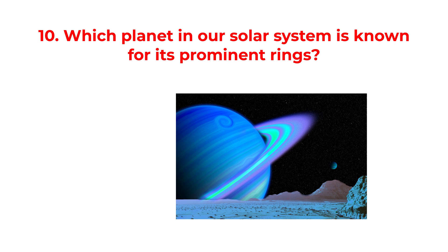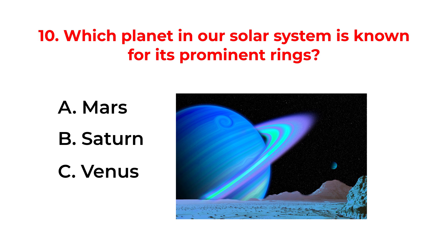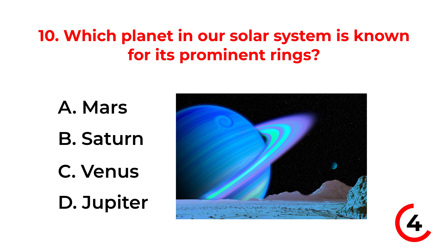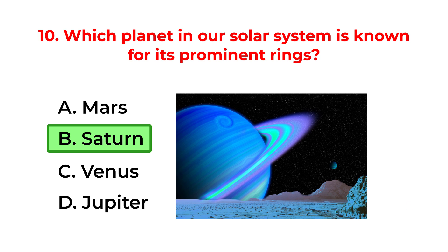Which planet in our solar system is known for its prominent rings? A. Mars. B. Saturn. C. Venus. D. Jupiter. The correct answer is option B: Saturn.